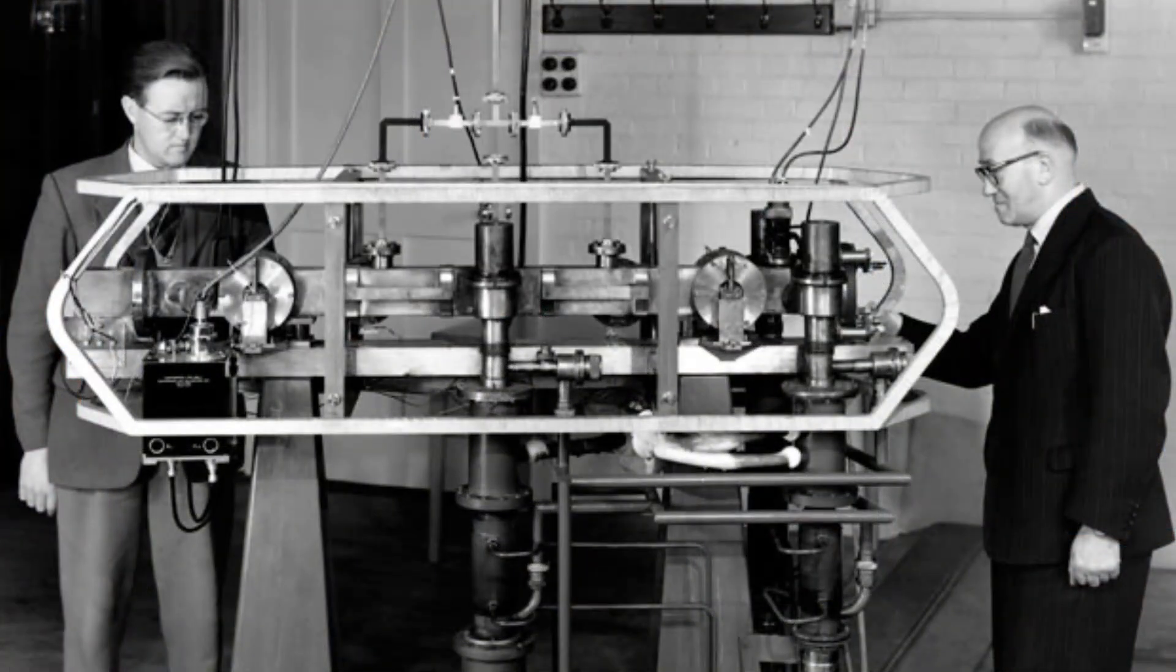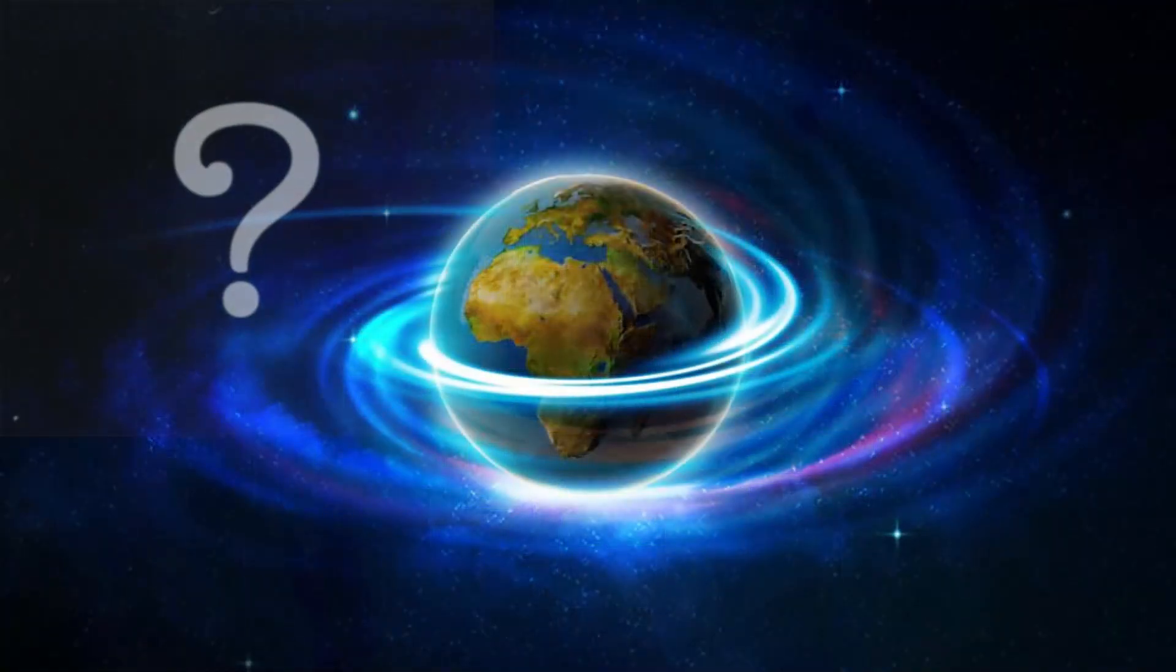This might not seem like a lot, but over time, it adds up. In fact, the Earth's rotation speed is slowing down on average, and the day is getting longer by about 0.018 seconds every 100 years. So why is the Earth's speed slowing down?